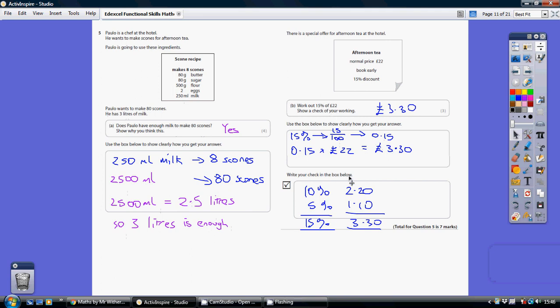Write your check in the box below. I've just done this by approaching it a completely different way. 10% is a tenth. 10% of 22 pounds is a tenth of it, which is £2.20. 5% is half of 10%, so half of £2.20, which is £1.10. 10% and 5% added together is 15%. And this and this together must be the 15%, which is another way of getting my £3.30.